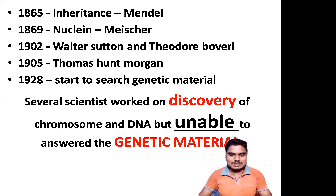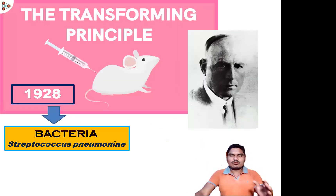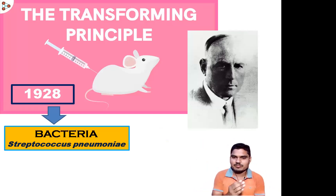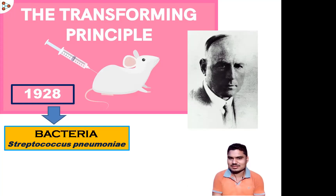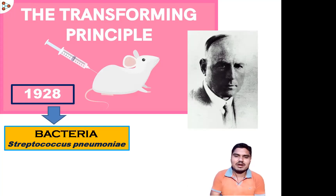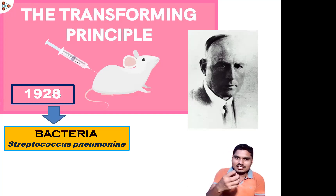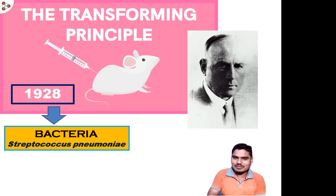Let me begin with one experiment carried out by one of the greatest scientists — Frederick Griffith in the year 1928. He started to demonstrate that DNA is the only material which is transmitted from one cell to another cell. Let me explain how he performed his experiment: why he chose the mouse, why he used injections, and what exactly he did.